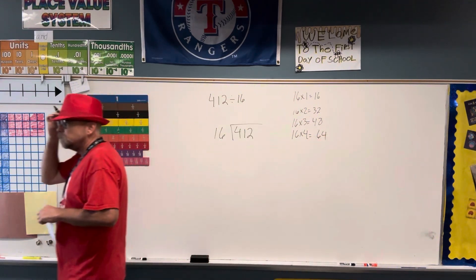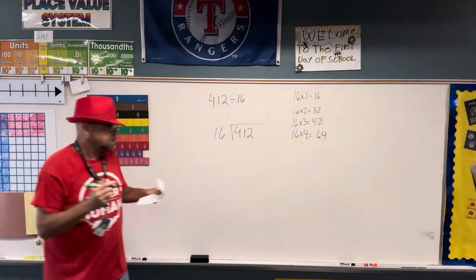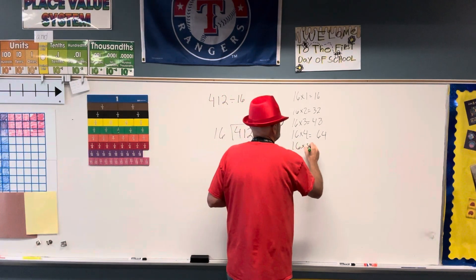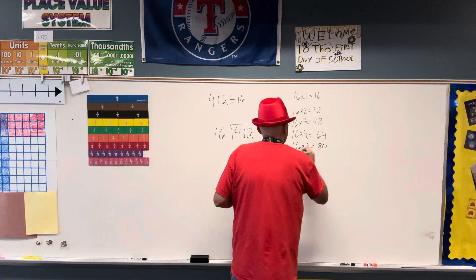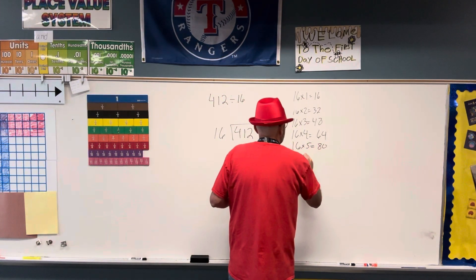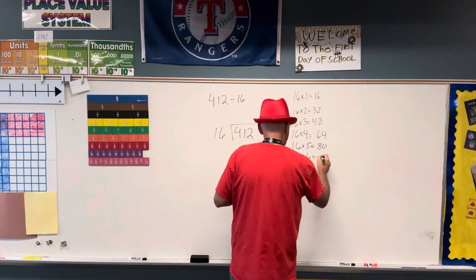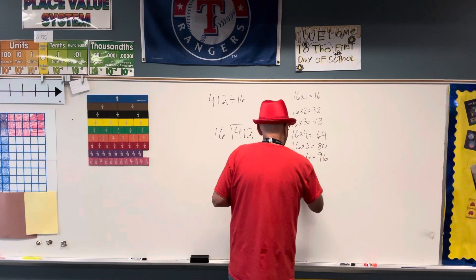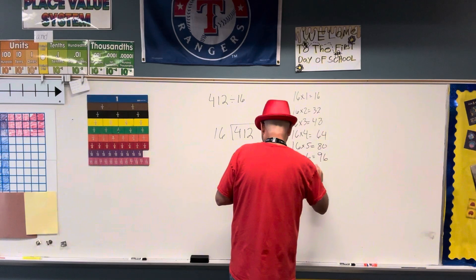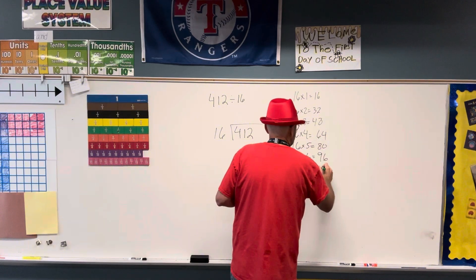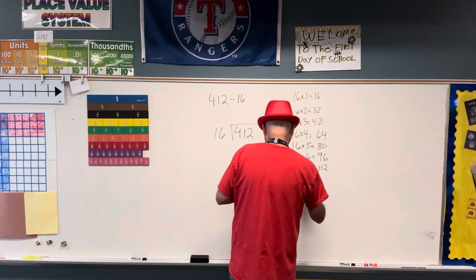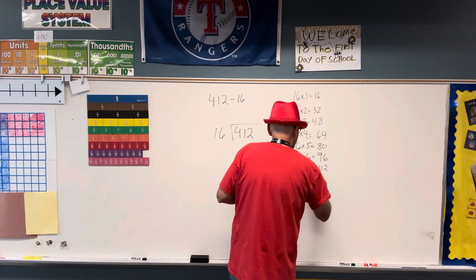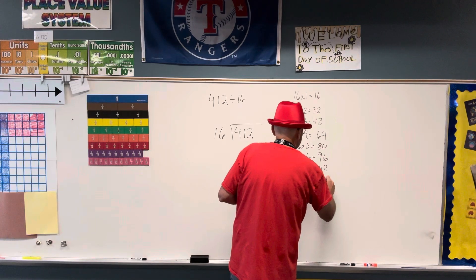16 times 5 is 80. 16 times 6 is 96. 16 times 7 is 112. 16 times 8 is 128.